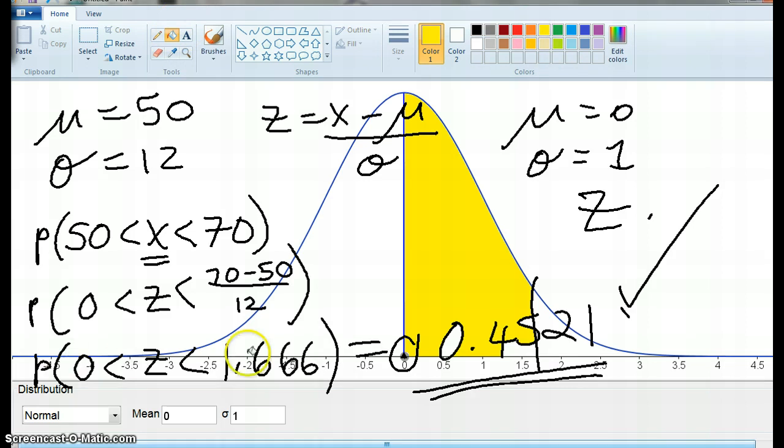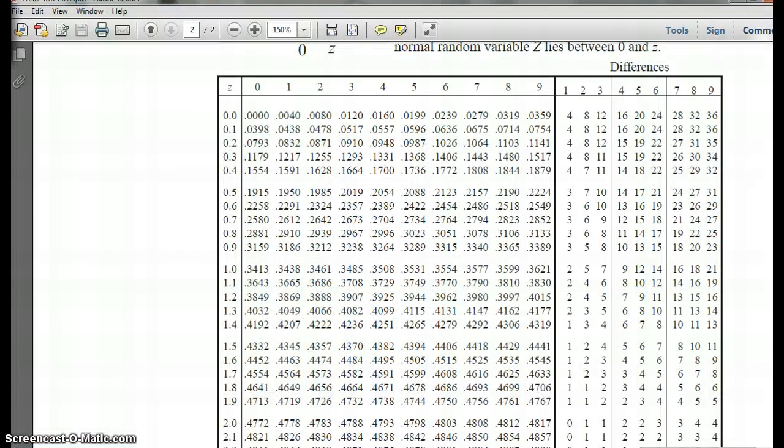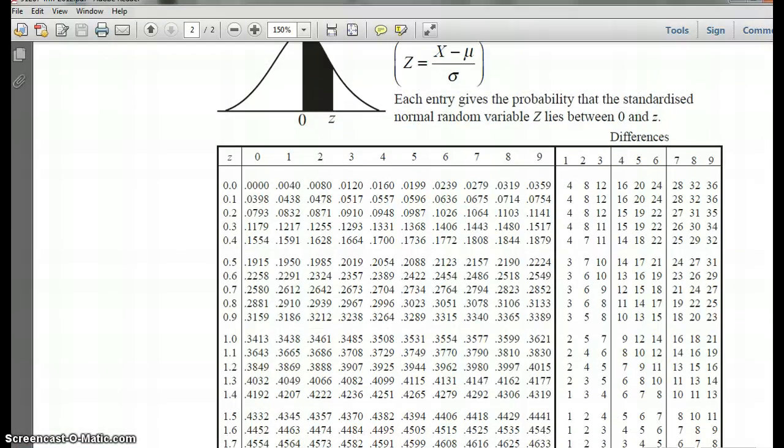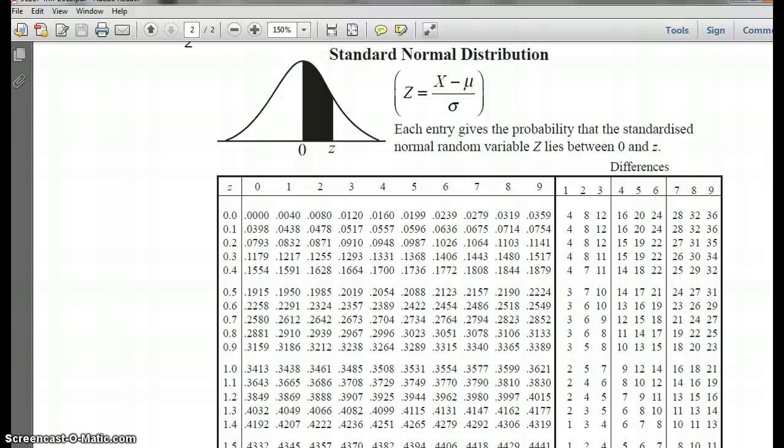So this is a nice, easy question, because the shaded area matches the table that you're given. And I think what you'll find for Achieved, they'll always give you one like that, that it actually matches this, so you don't have to do anything fancy. Does that make sense?